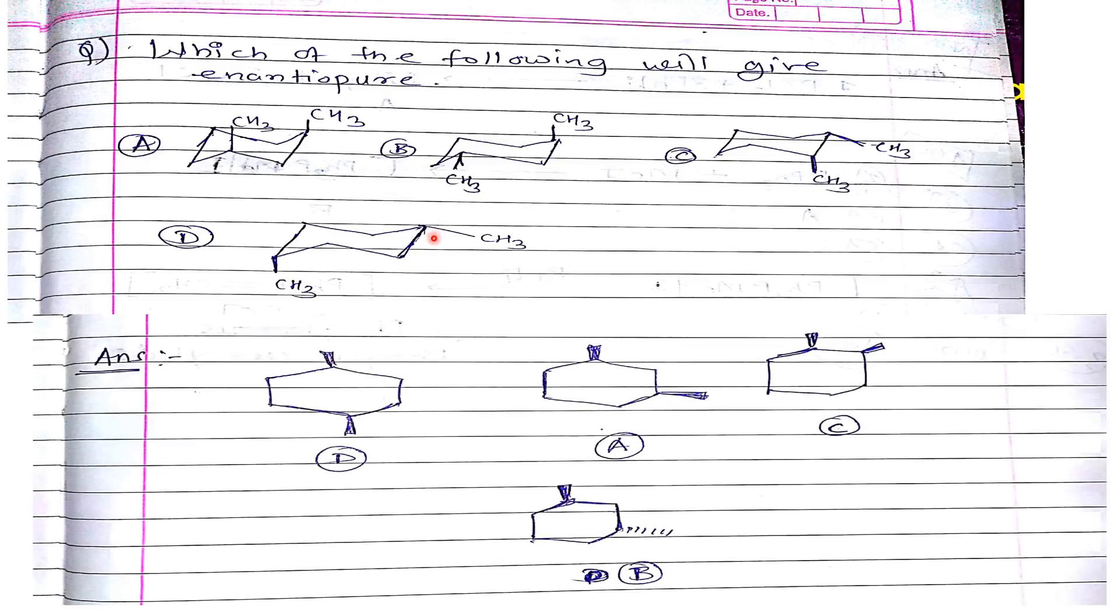If you look at the D option, 1,4-dimethyl cyclohexane, if you draw the correct structure in chair form, this is cis 1,4-dimethyl. It's having a plane of symmetry, so this won't be the enantiomer.